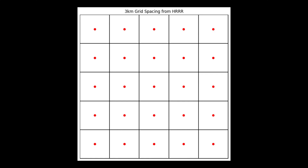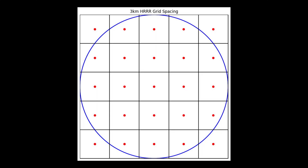If you don't have a neighborhood probability search area set, this means that you are looking at point probabilities. A radius larger than zero is considered a neighborhood probability. Neighborhood probabilities are useful when looking at features that are localized and displaced between ensemble members.